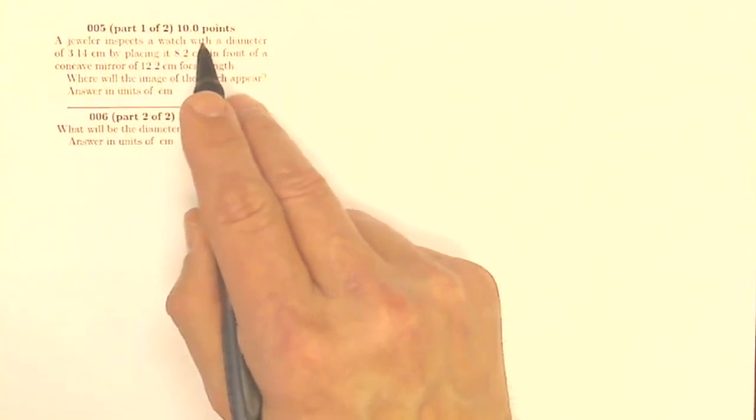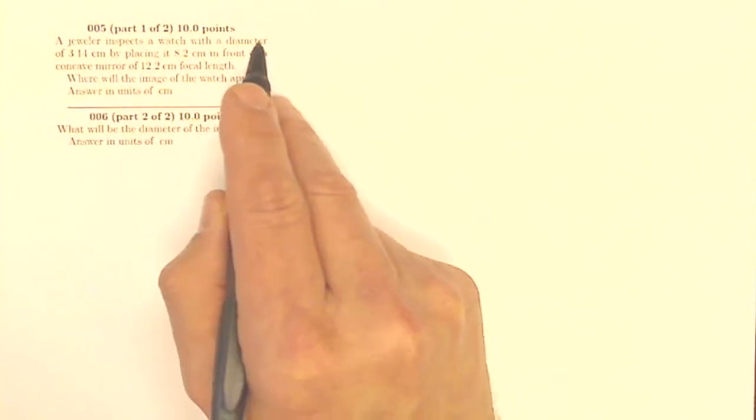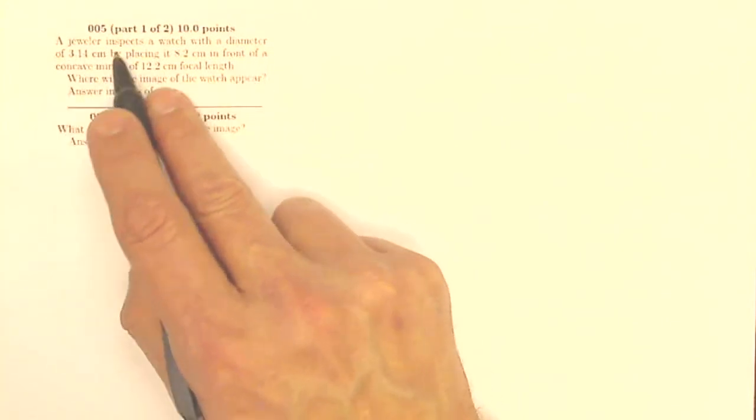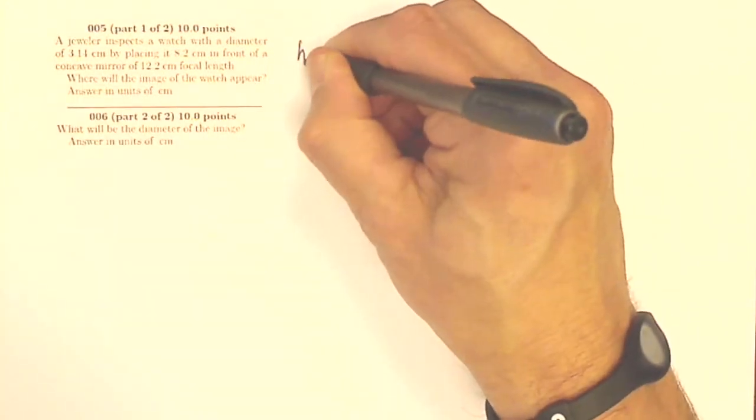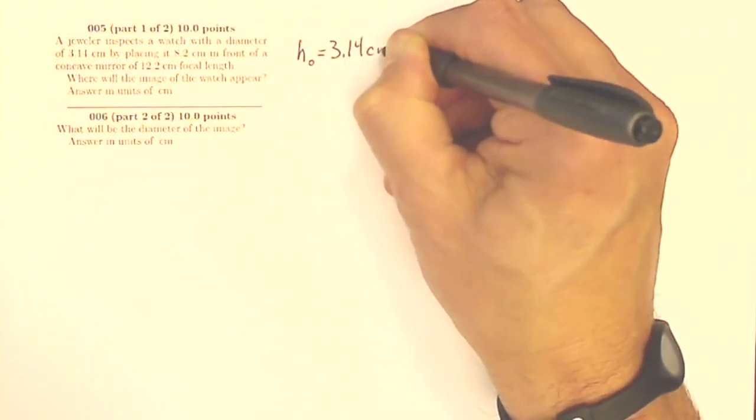A jeweler inspects a watch with a diameter of 3.14 centimeters. Well, what is that? A diameter? Oh, that's of the watch itself. So that's really the height of the object for me, is 3.14 centimeters.